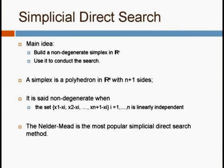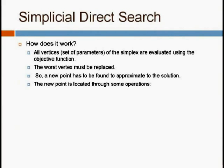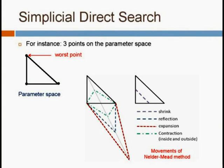The simplicial direct search is a little bit different. The main idea is to build a non-degenerate simplex and use it to conduct the search. The Nelder-Mead is the most popular simplicial direct search method, and it works with vertices. Each vertex is a set of parameters of the simplex and is evaluated using the objective function. The worst vertex must be replaced, and a new point is found to approximate the solution using operations such as expansion, contraction, reflection, and shrink. For instance, in the parameter space with three points in R², the worst point moves according to these operations.